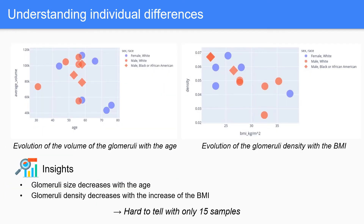We also use our segmentation to generate insights about differences between individuals. It's quite hard to tell because we only have 15 samples, but it seems that glomeruli size decreases with age and that glomeruli density decreases with the increase of BMI.